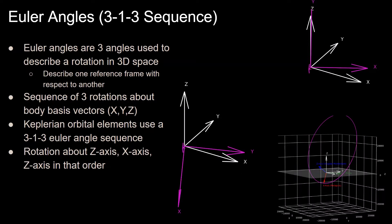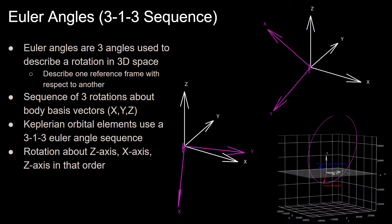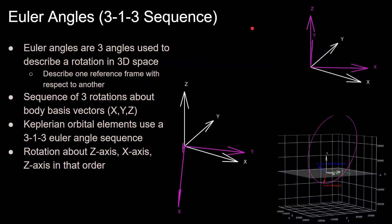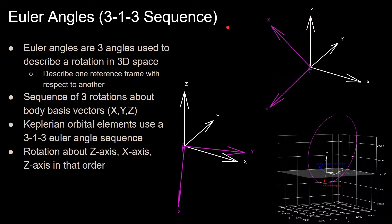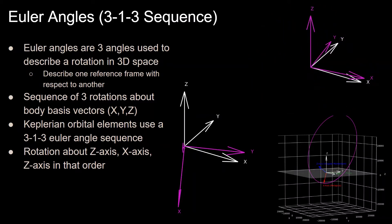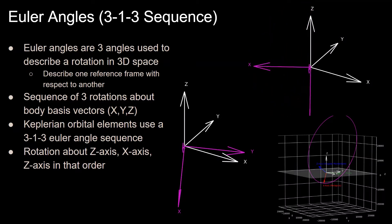To understand how the Keplerian orbital elements are defined, we need to know what Euler angles are. Specifically, we are using a 3-1-3 Euler angle sequence. Euler angles are three angles that describe a rotation in 3D space, or equivalently, they describe one reference frame with respect to another. They do this through a sequence of three rotations about body basis vectors — the body x, y, and z vectors.